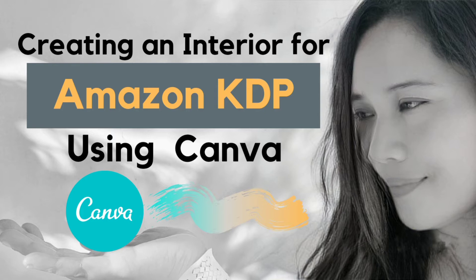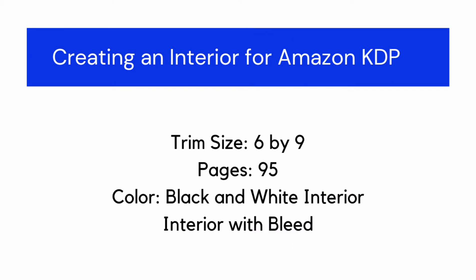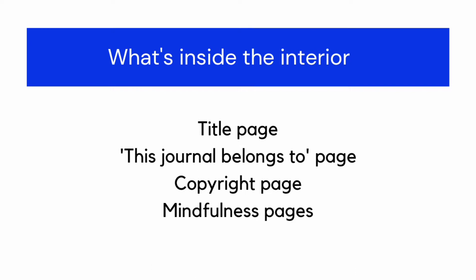Let's begin creating the interior for Amazon KDP. The trim size is 6 by 9, pages is 95, black and white, and the interior is with bleed. What's inside the interior is a title page, a 'This Journal Belongs To' page, a copyright page, and the mindfulness pages.